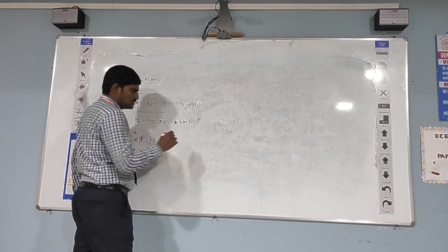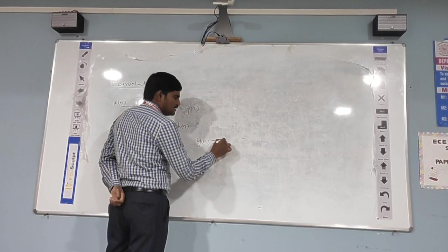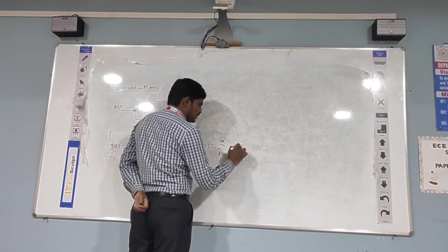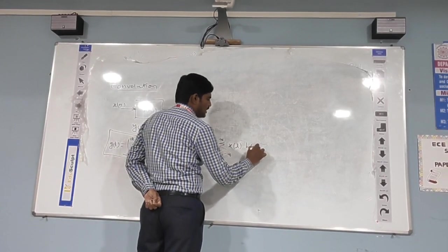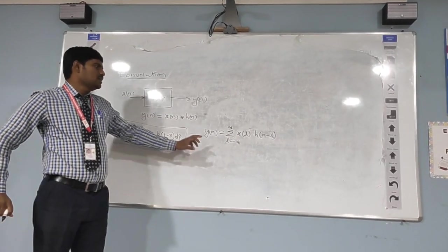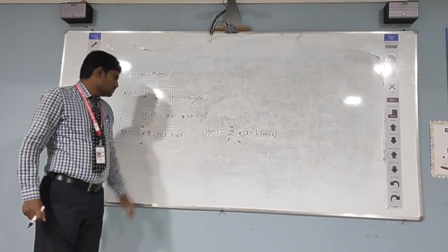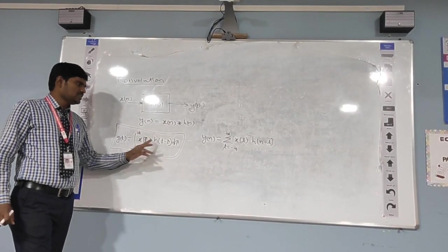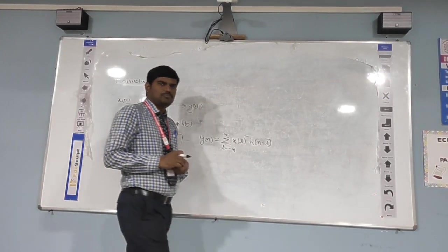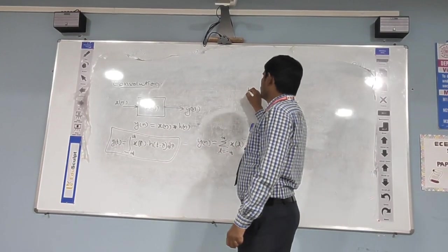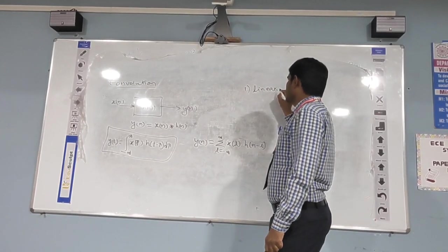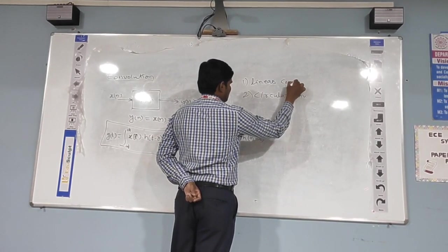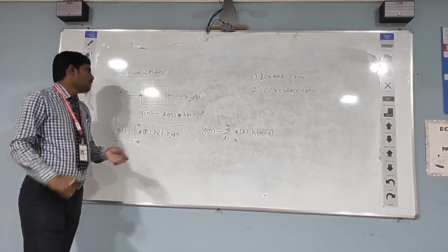For discrete time systems, y(n) can be written as the summation from l equal to minus infinity to plus infinity of x(l) h(n−l). This is how we represent discrete time convolution. For continuous time convolution there is only one type, expressing the overlap area of the input signal and impulse response. But for discrete time systems, convolution has two types: linear convolution and circular convolution.